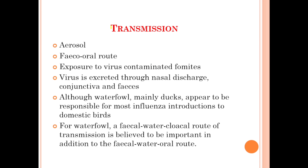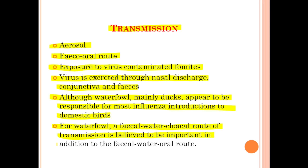Now we will discuss the transmission of this infection from infected birds to healthy birds. Transmission can occur via aerosol, through the fecal-oral route, or through exposure to contaminated fomites. The virus is also excreted through nasal discharges, conjunctiva, and feces. Waterfowl, mainly ducks, appear to be responsible for most influenza introductions to domestic birds, and a fecal-water-cloacal route of transmission is believed to be important.